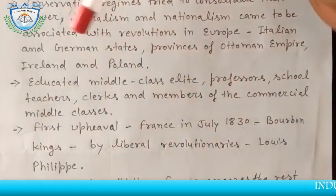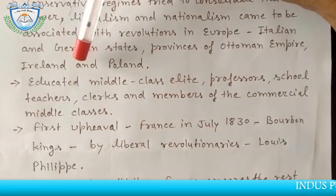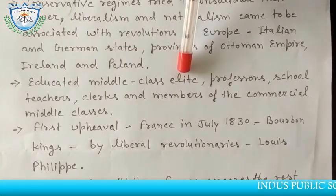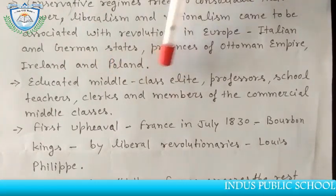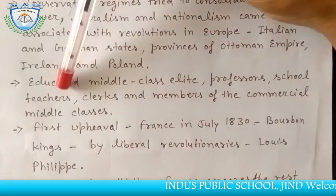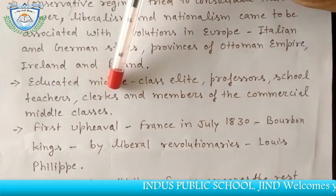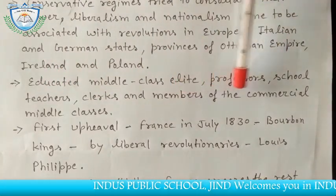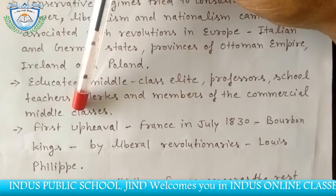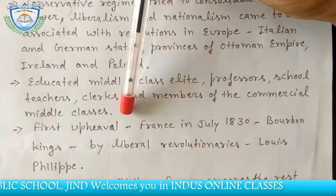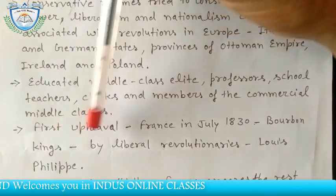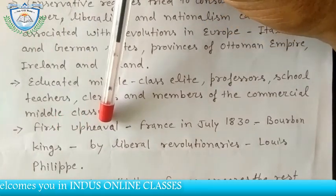The people who participated in these revolutions were educated middle class and elite people — professors, school teachers, clerks, and members of the commercial middle class, i.e., merchants and traders. These were the people who took part in these revolutions.